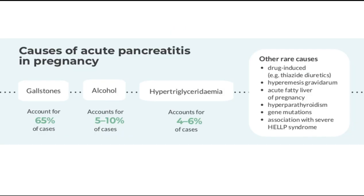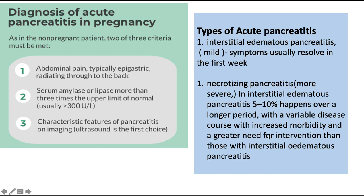The causes of acute pancreatitis in pregnancy: the most common cause is gallstones, accounting for 65% of cases. The next most common is alcohol, accounting for 5 to 10% of cases, and hypertriglyceridemia accounting for 4 to 6% of cases. Rarer causes include medications such as thiazide diuretics, hyperemesis gravidarum, acute fatty liver of pregnancy, hyperparathyroidism, gene mutations, and association with severe HELLP syndrome.